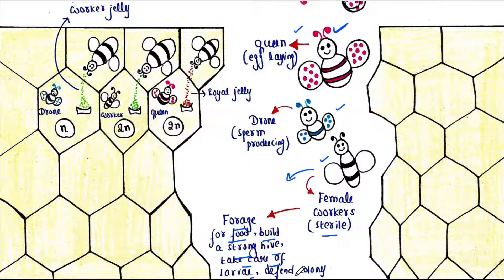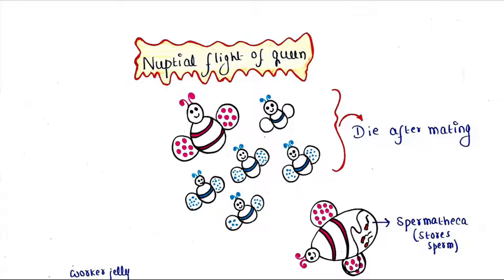Now a queen mates only once in her life during her nuptial flight, which is a flight during that time the queen mates. She stores the sperm in a special organ that is called spermatheca. These stored sperms are used to lay eggs inside the hive for the rest of her life.